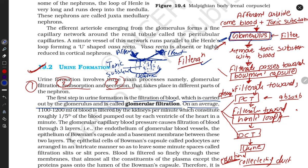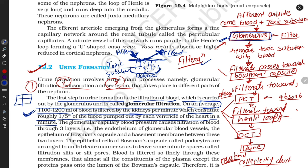On average, approximately 1100 to 1200 ml of blood is filtered by the kidney per minute — this is an average ratio that can fluctuate during the day. This constitutes roughly one-fifth of the blood pumped out by the right ventricle of the heart per minute. The heart pumps blood through the atria and ventricles, which then pass blood towards the body organs.